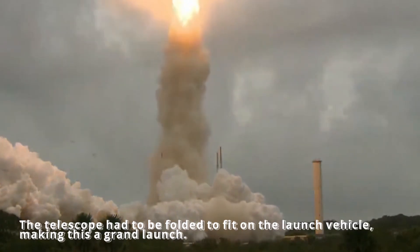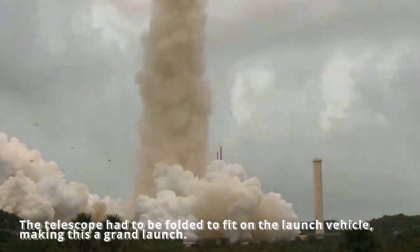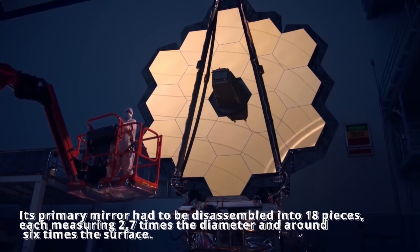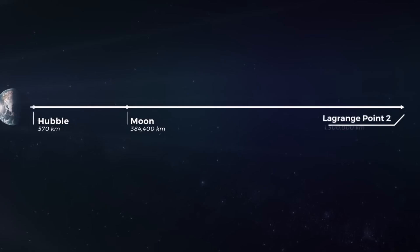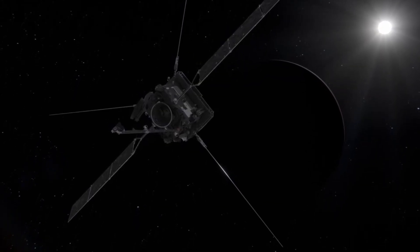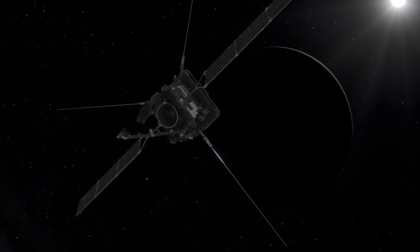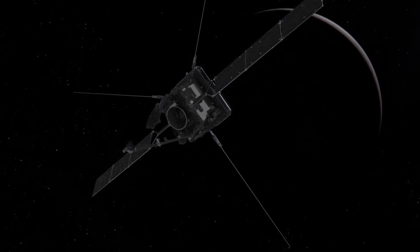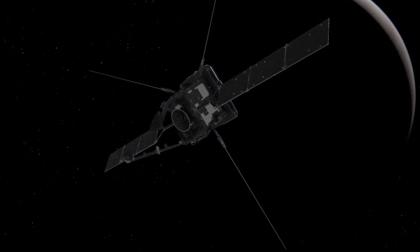The telescope had to be folded to fit on the launch vehicle, making this a grand launch. Its primary mirror had to be disassembled into 18 pieces, each measuring 2.7 times the diameter and around 6 times the surface. Since the JWST was intended for a location so far away from Earth that astronauts could not possibly be sent to repair or refuel, the development team had no second chances. Luckily, everything went smoothly.